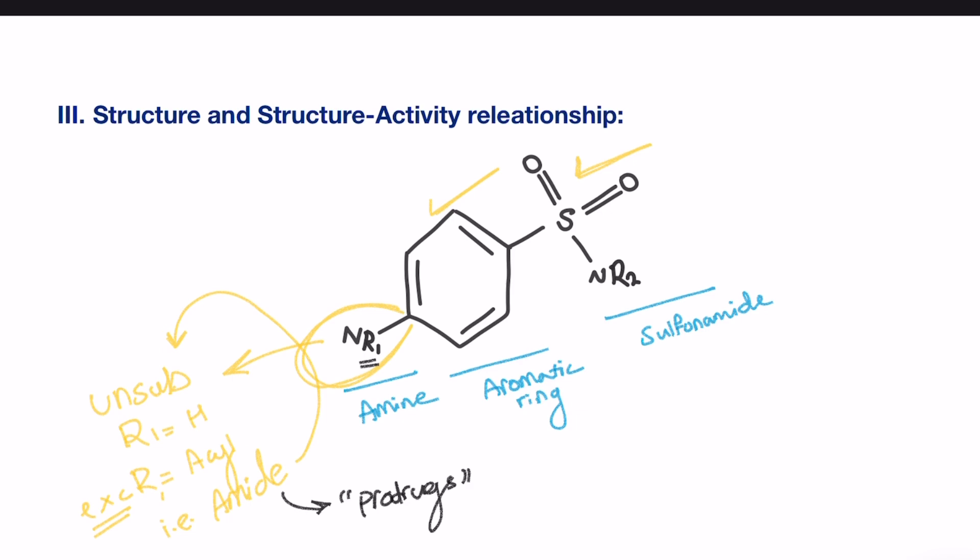So whenever you see an amide on the amino group attached to the benzene, you immediately say that this sulfonamide is a prodrug. On the sulfonamide, the nitrogen can be primary or secondary, but can't be tertiary. So not tertiary. And both the sulfonamide and the amine group must be directly attached to the benzene. And the aromatic ring must be para-substituted only, as extra substitution will eliminate the activity due to steric reasons.